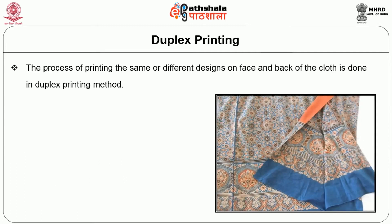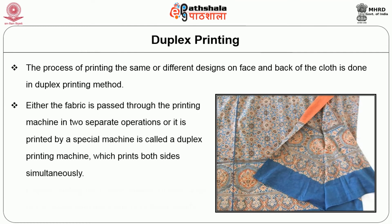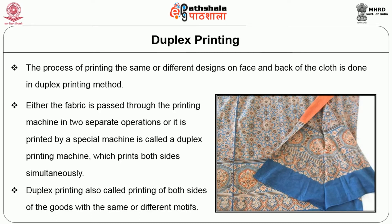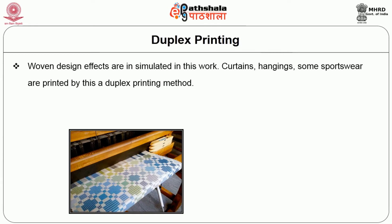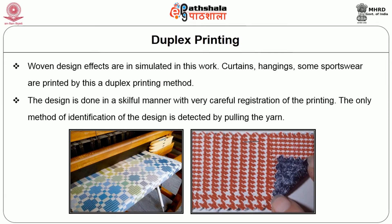Duplex printing: this process involves printing the same or different designs on the face and back of the cloth. Either the fabric is passed through the printing machine in two separate operations, or it is printed by a special machine called a duplex printing machine, which prints both sides simultaneously. Duplex printing is also called printing of both sides of the goods with the same or different motifs. Woven fabric effects are simulated in this way; curtains, hangings, and some sportswear are printed by this method. The design is done in a skillful manner with very careful registration.